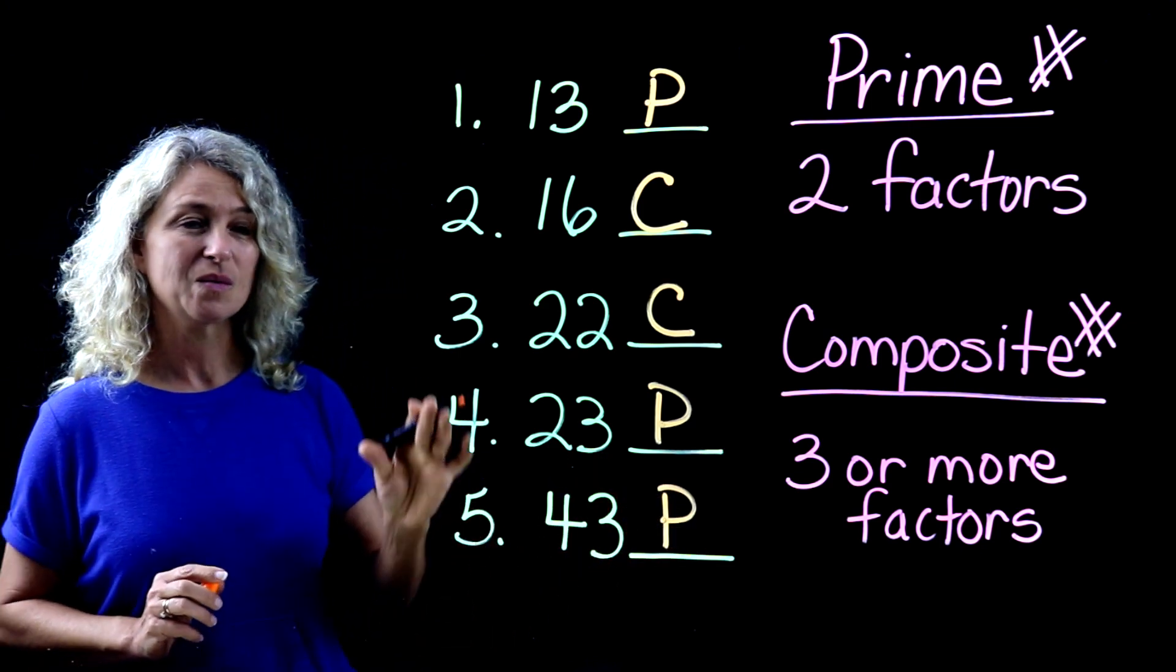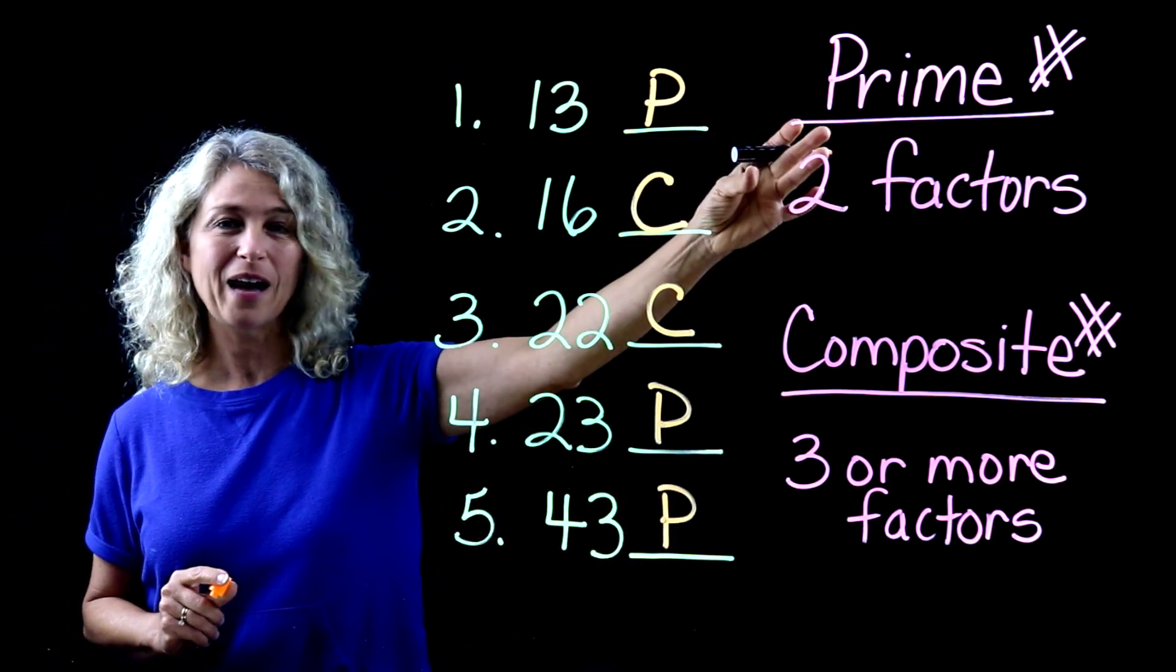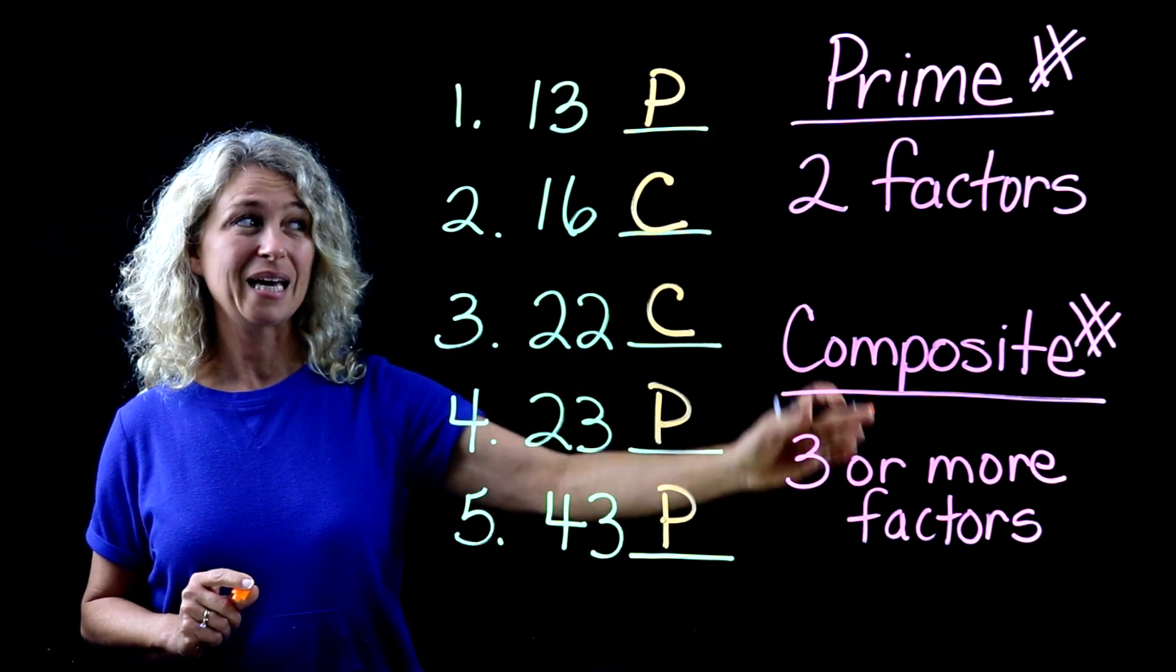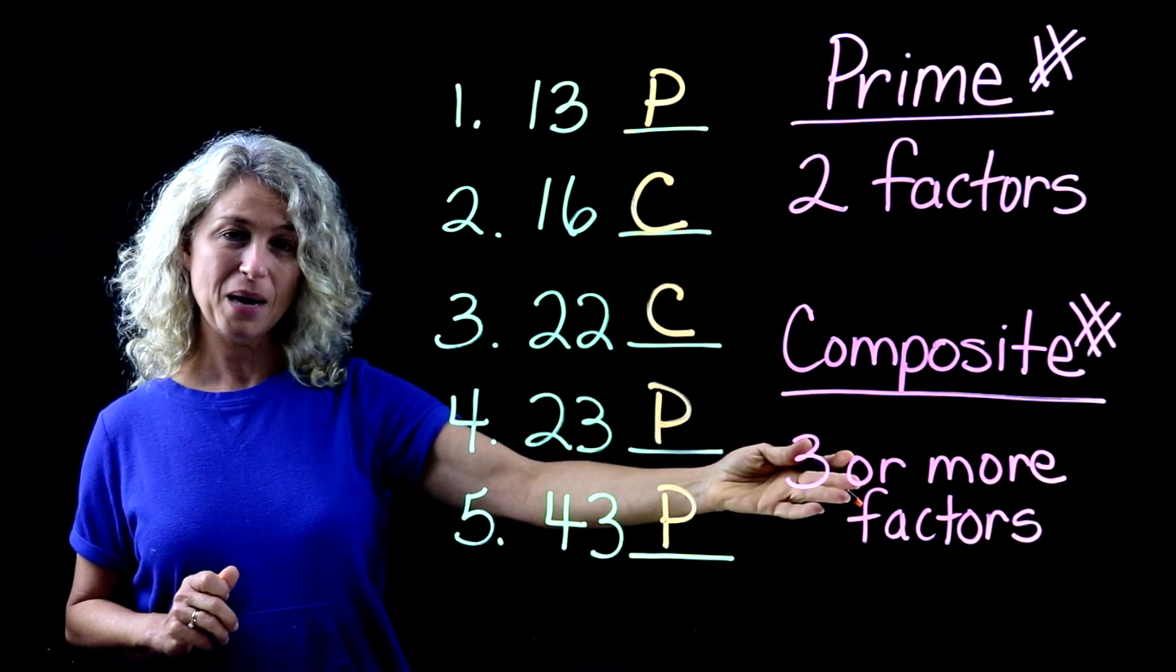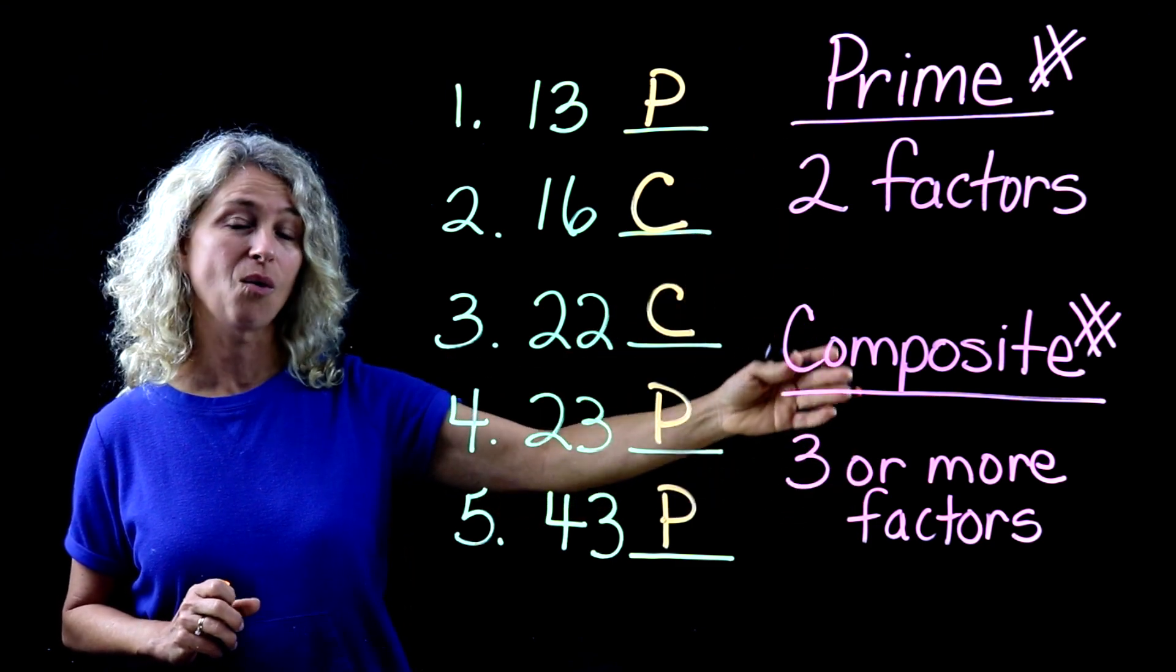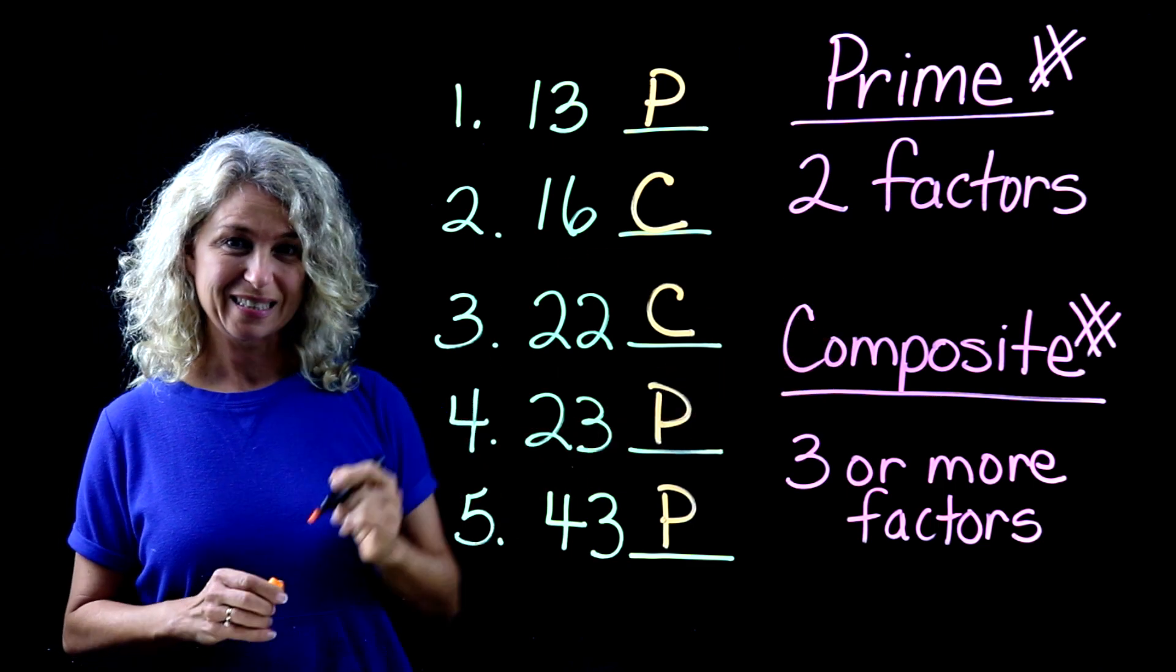Just remember, two factors for prime, and it's always the number itself times 1. Composite numbers are three or more factors. Thanks for watching!